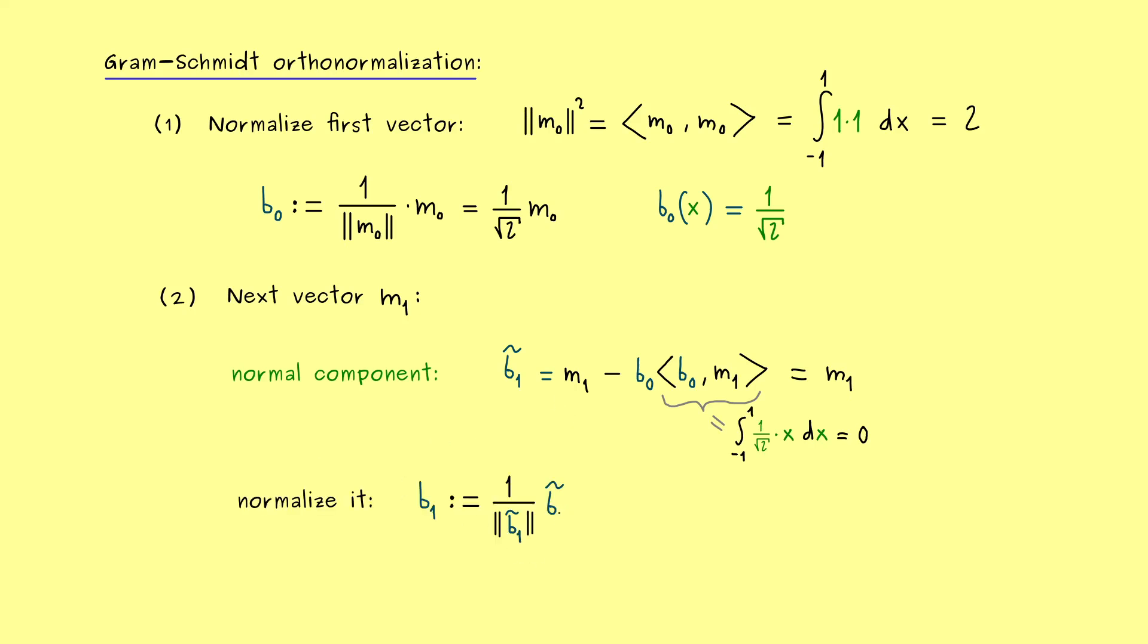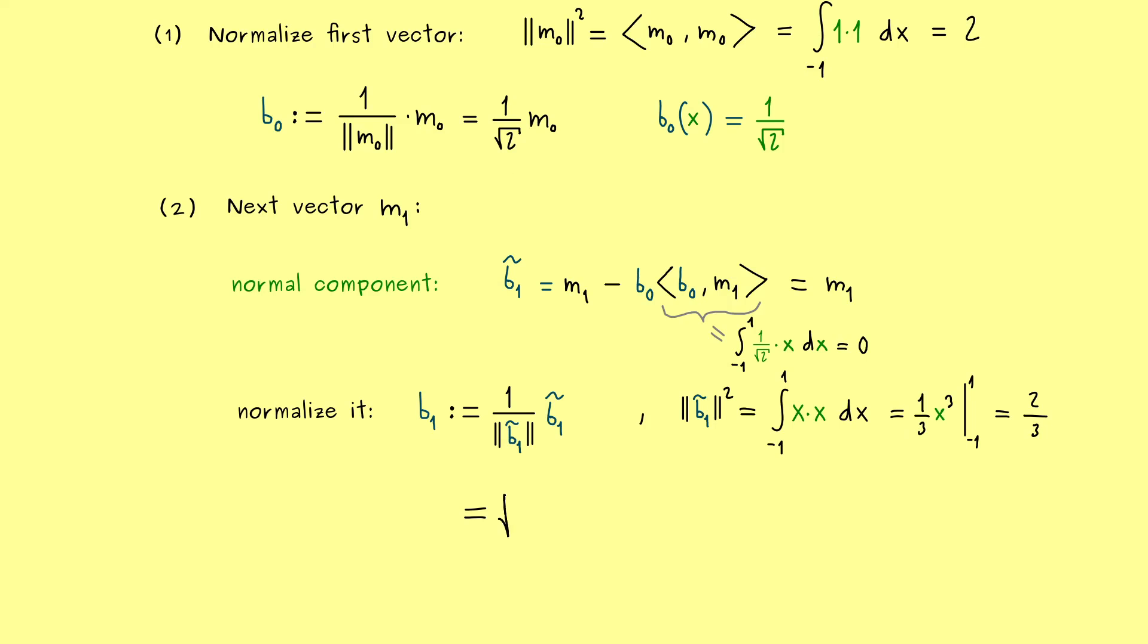But still, never forget, the normalization still has to happen. So we still have to calculate the norm of B1 tilde, which is simply m1. So we know it's just the integral from minus 1 to 1 of x times x. And again for the calculation we square the norm to avoid a square root here. And here we conclude that the antiderivative of x squared is 1 over 3 x cubed. And then put in the limits and what we get out is 2 over 3. Hence, now we can simply write down B1. It's the square root of 3 halves times m1. And therefore if we want to write it as a function we have the square root times x.